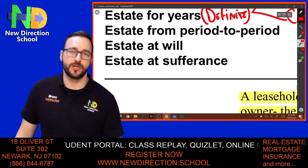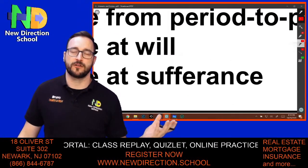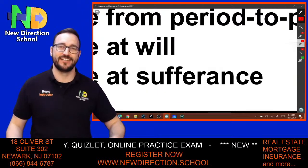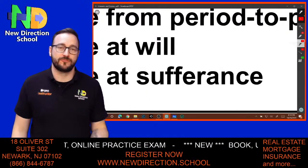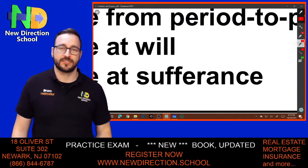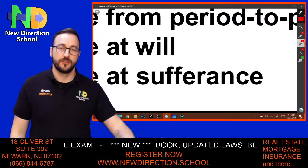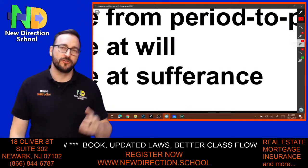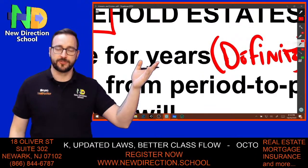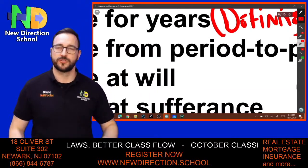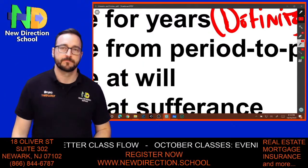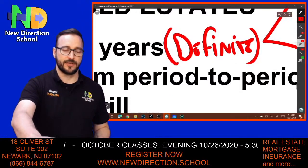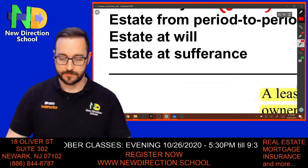Estate at will means the landlord is okay with you staying — your lease expired and they allow you to stay for an indefinite period as long as you pay. Estate at sufferance means you violated the terms: you didn't pay rent, you're destroying the property, or disturbing the peace. So the basics are: estate for years (definite period) or period to period (renewable), and then it could become either at will or at sufferance.